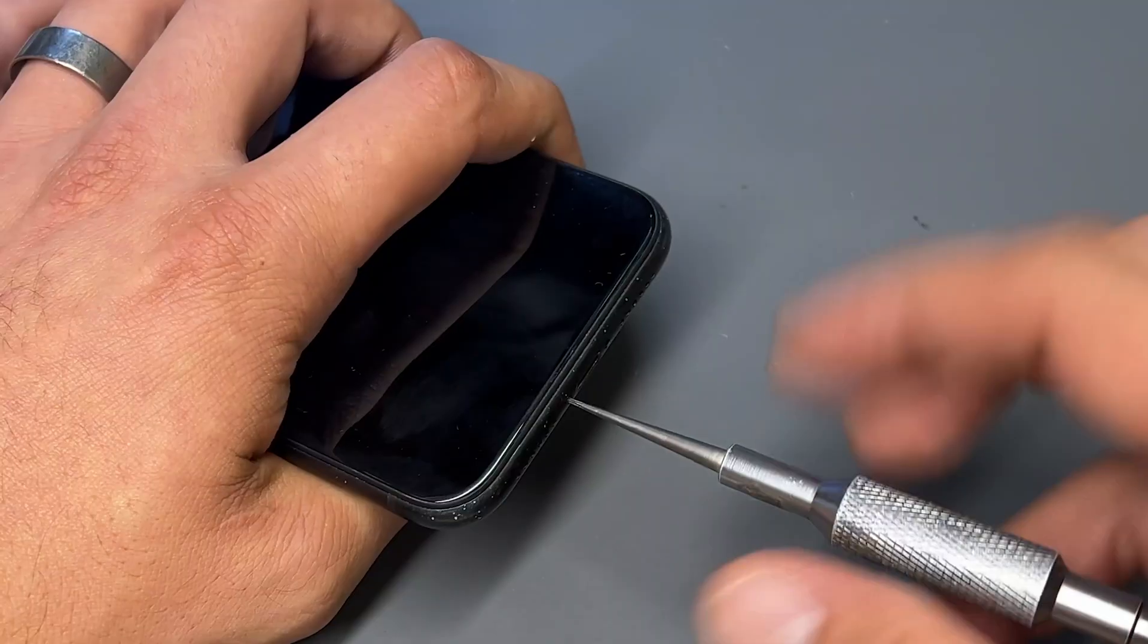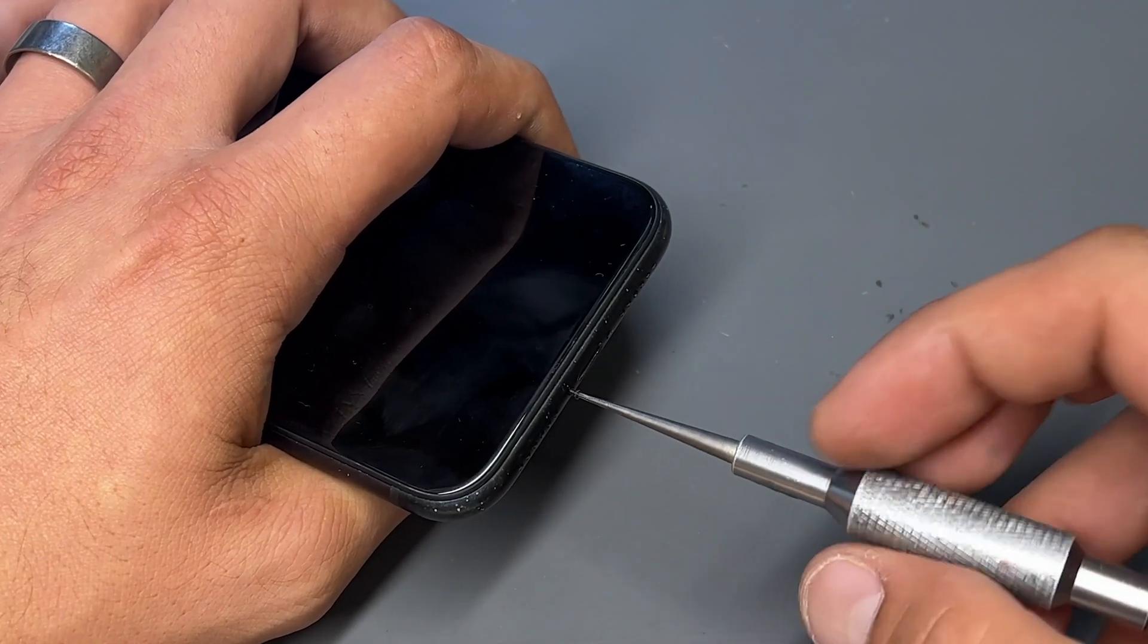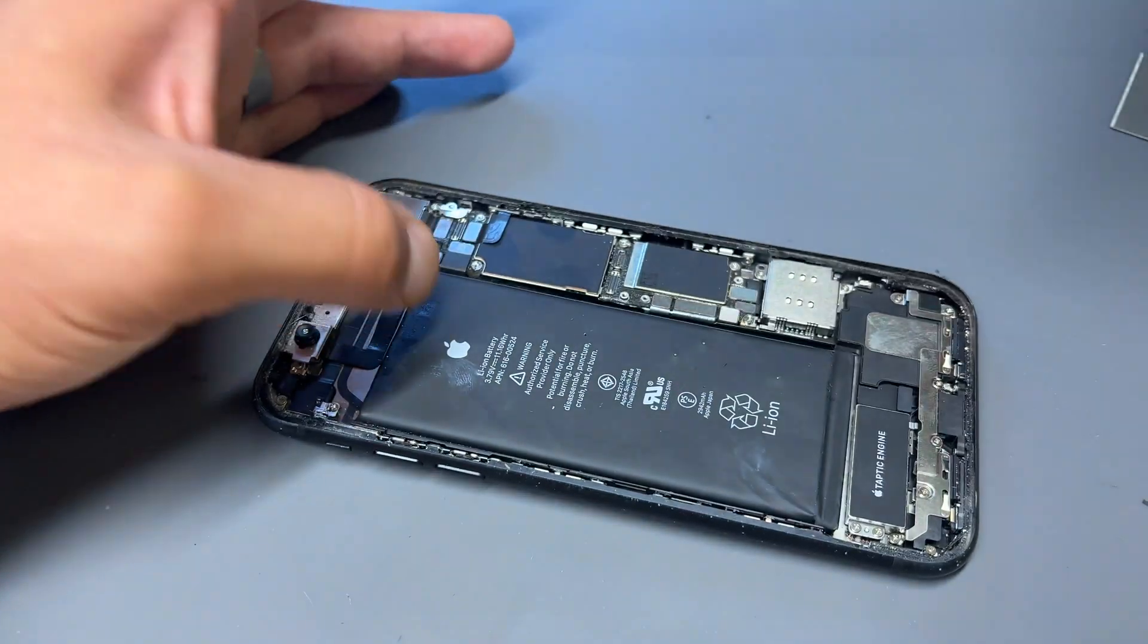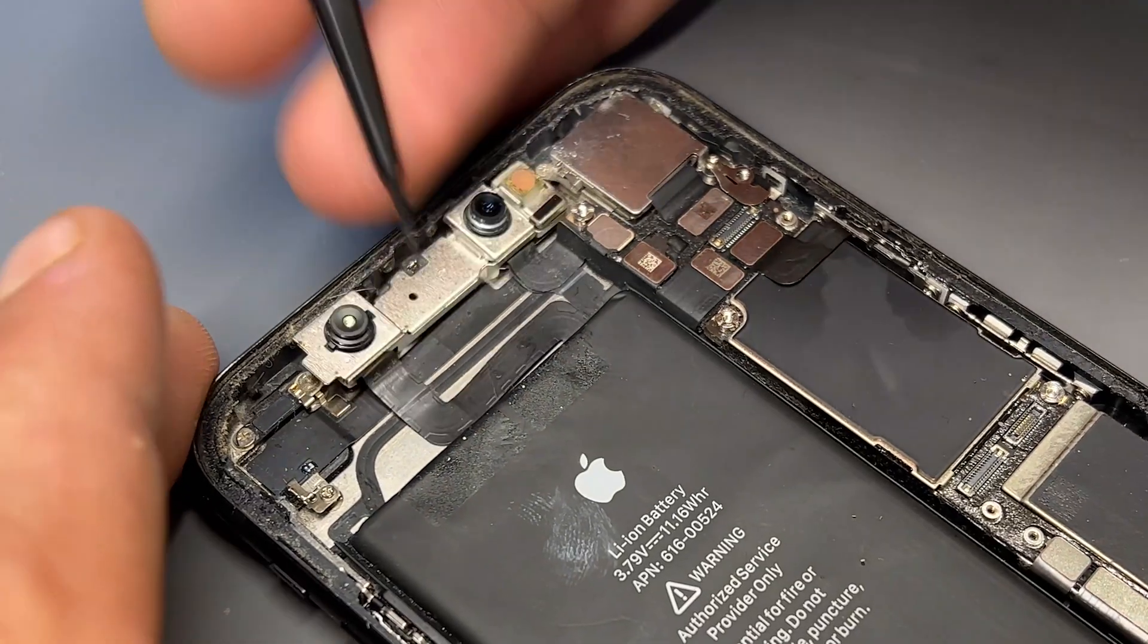So let's open up this phone and take a closer look. First, I open up the device and get the screen out of the way. Then disconnect the front camera, infrared camera and dot projector flexors.